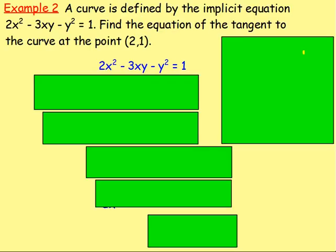Example 2: a curve is defined by the implicit equation 2X squared take away 3XY take away Y squared equals 1. Find the equation of the tangent to the curve at the point 2, 1. For the equation of a tangent, think gradient point equation. We've got the point, but we need to find the gradient. To get the gradient, we need to differentiate.